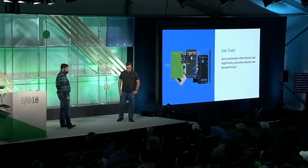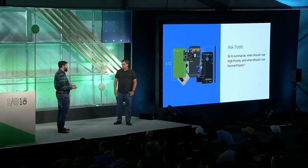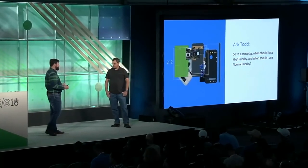So to summarize — when should I use high priority, and when should I use normal priority? The basic rule has been the same since Marshmallow: use high-priority messages only for situations in which you'll generate a user interaction, such as a notification. In addition, you should not expect to be able to call home to your servers to get additional content before displaying a notification, as the background service may time out.